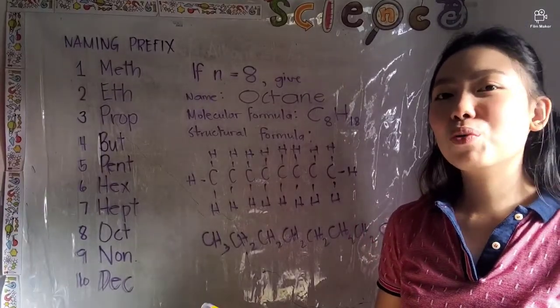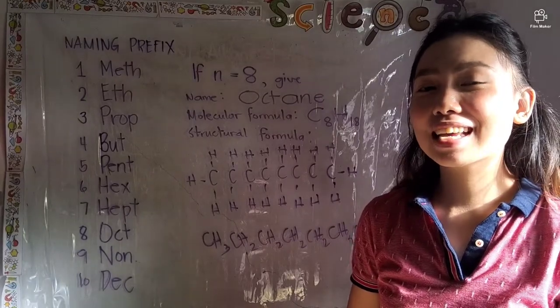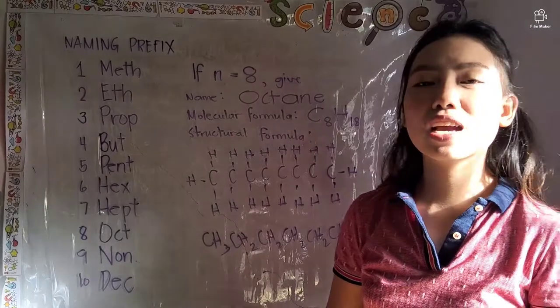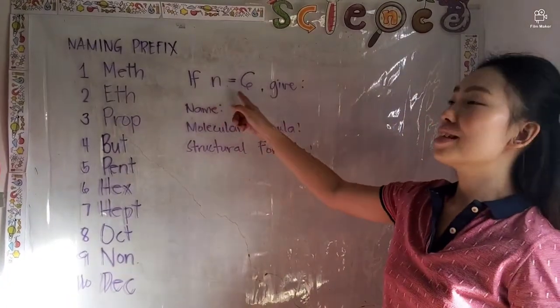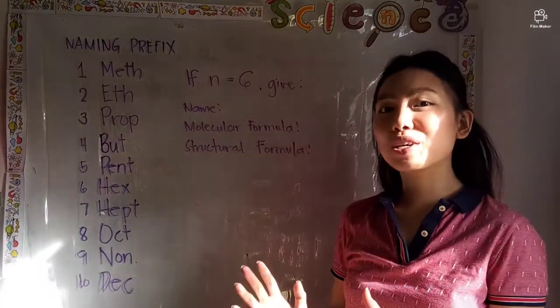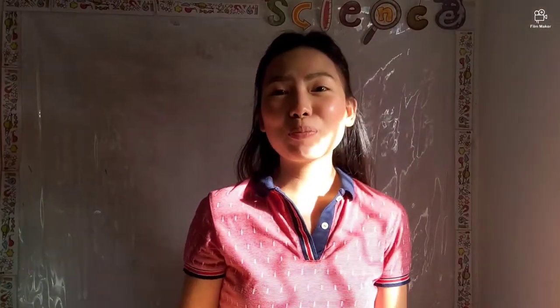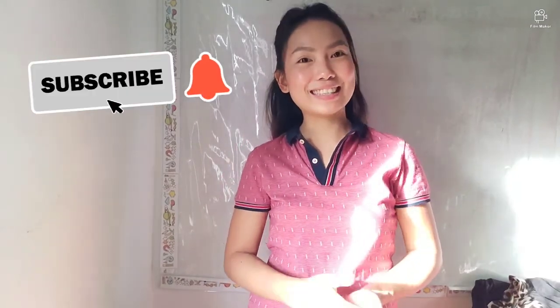That is how we do hydrocarbons: alkanes, alkenes, alkynes, cycloalkanes, aromatic hydrocarbons, and alkyl halides. For another practice test: if n = 6, give the molecular formula and structural formula — try answering it yourself. That would be all for our video lesson today on organic compounds and hydrocarbons. Enjoy answering your modules 4 and 5 of Science 9. See you on the next video lesson — don't forget to subscribe to the YouTube channel. Goodbye!